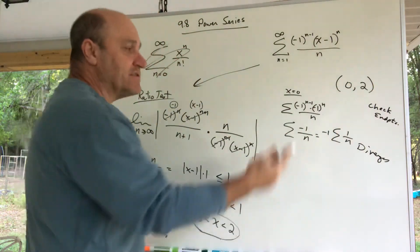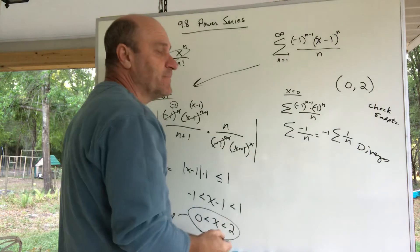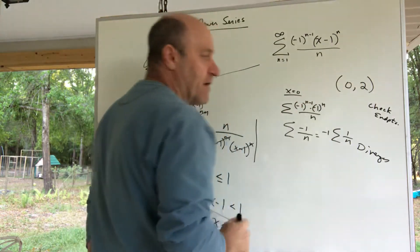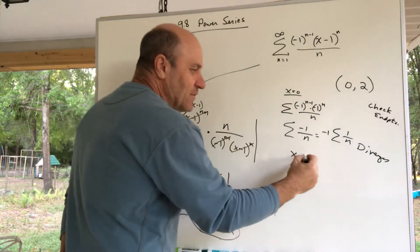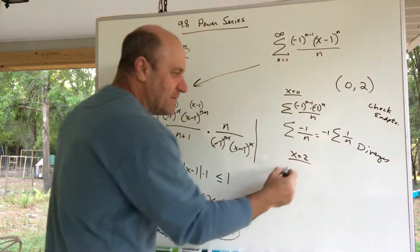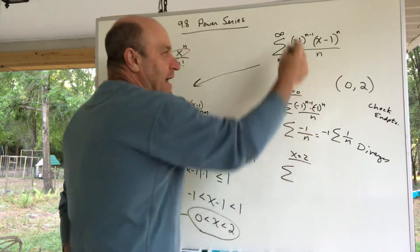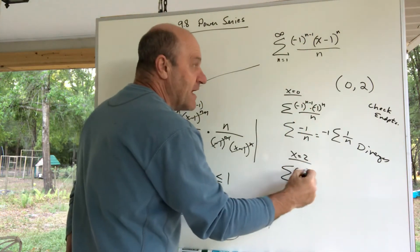If I check the 2, it gets a little weird here. Let's see what happens at 2. That's a negative 1 to the n minus 1.